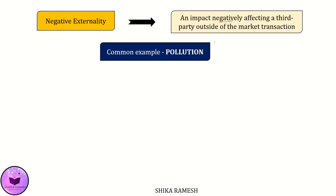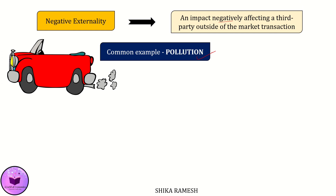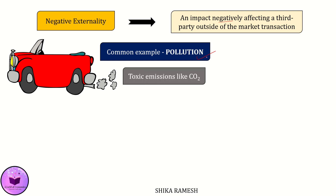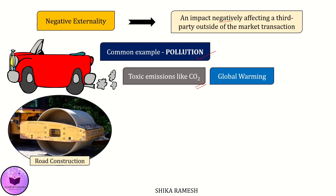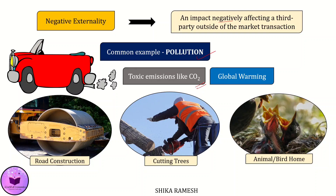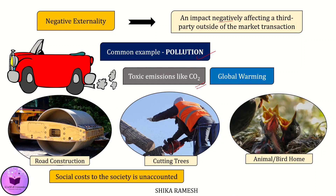The most common example of a negative externality is pollution. The production and consumption of automobiles is a major contributor to pollution. When making cars, factories use some pretty nasty stuff which ends up as harmful waste in our environment. Driving cars also gives off toxic emissions like carbon dioxide, a major contributor to global warming. Think about road construction — we are cutting down trees and messing up animal habitats to build them.